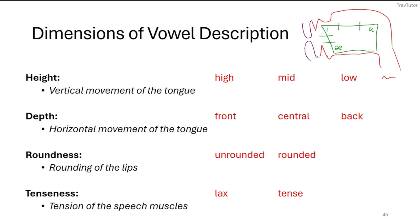We can also talk about how tense your tongue is — whether it's lax or tense. You can think of it this way: if your tongue is pushing an extreme boundary, going close to either the bottom, top, front, or back of your mouth, then it's going to be tense. If it's somewhere in the middle, it'll be lax.